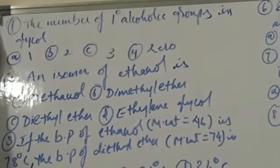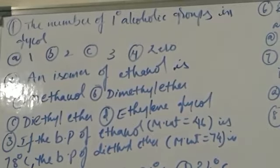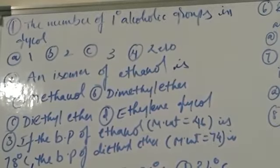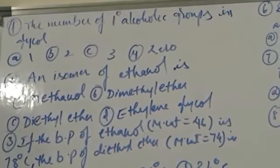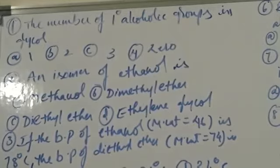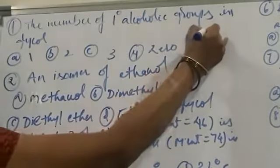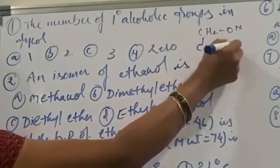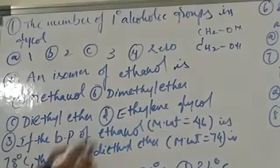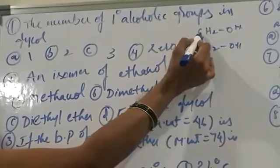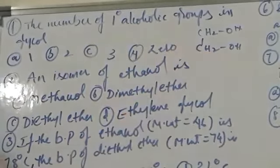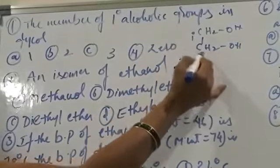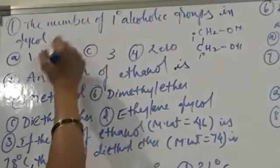The number of primary alcoholic groups in glycol. A primary alcohol group is an OH functional group linked with a primary carbon. In ethylene glycol, both carbons are primary carbons, each linked with another carbon. So the number of primary alcoholic groups is 2.